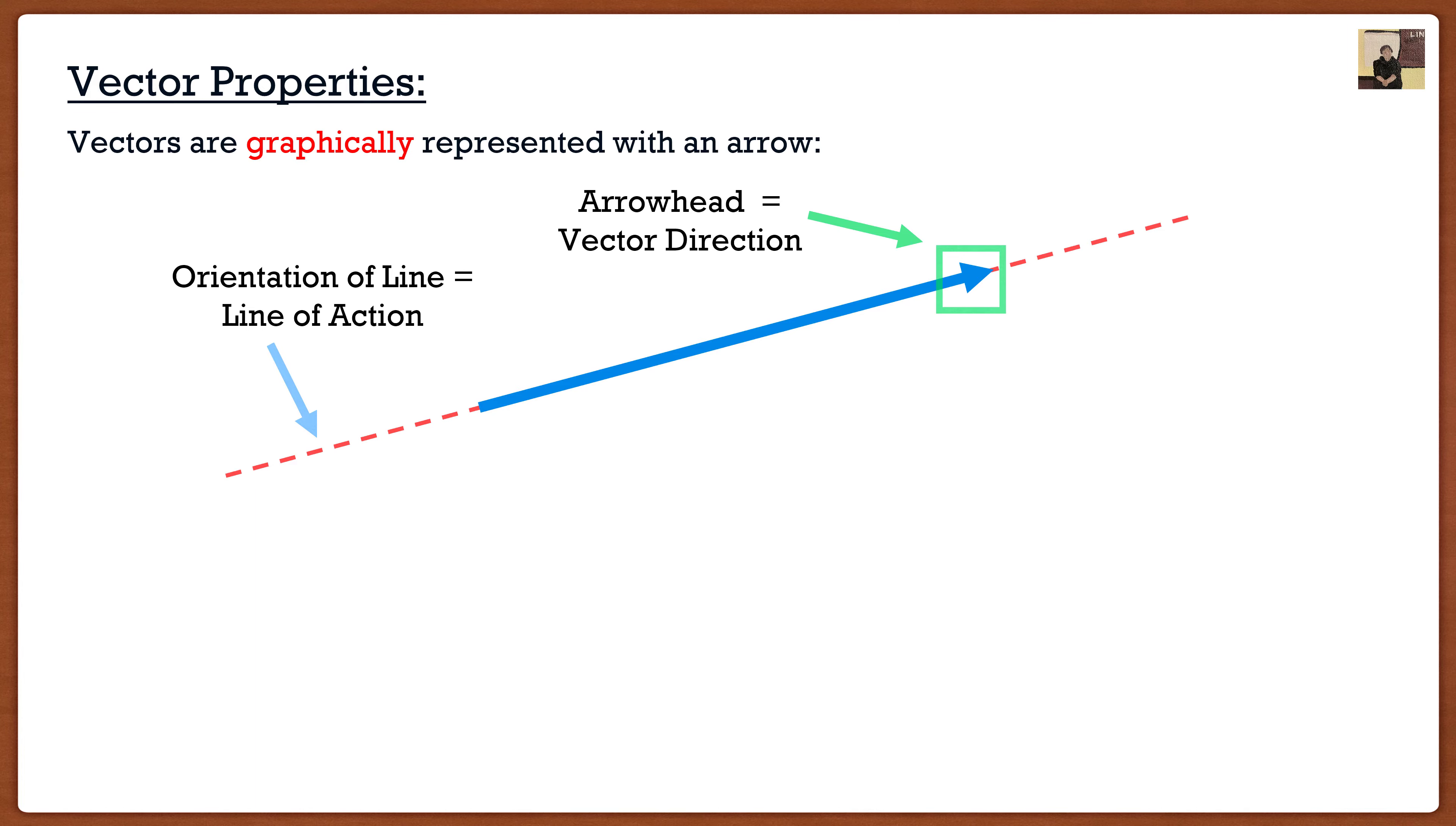And the final thing, which is going to play a very important role in these first couple of videos, is the length of the vector. The length of this vector is the magnitude of the vector. So if I'm going 100 miles per hour south, 100 miles per hour, that's the magnitude. The direction is south, but the magnitude is 100 kilometers per hour or miles per hour. That's going to be a scalar. The magnitude of a vector is a scalar.